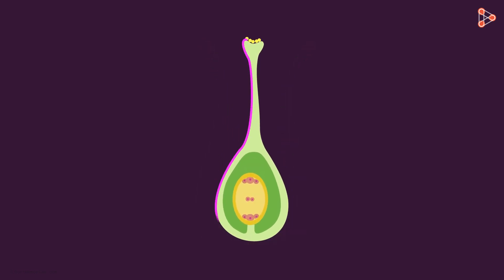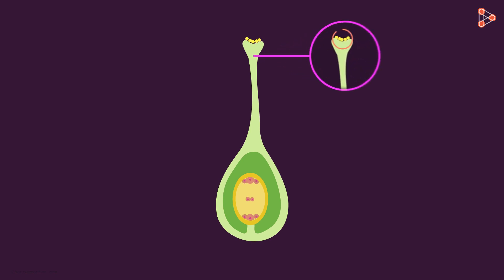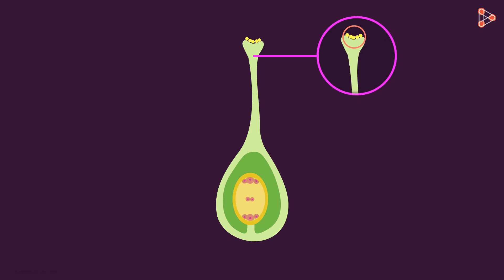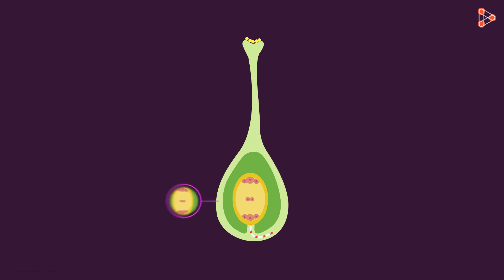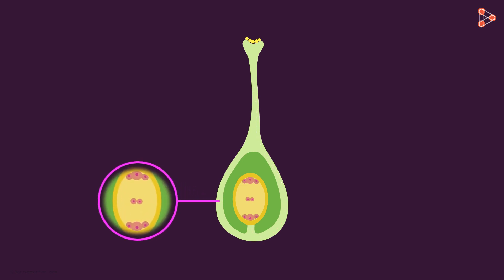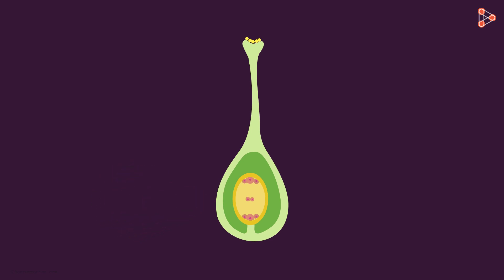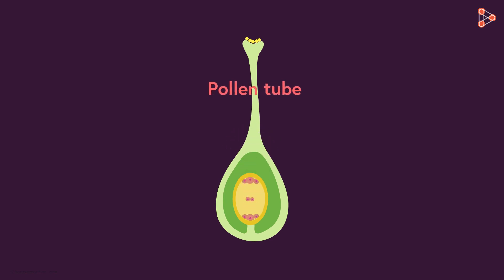Let us zoom into the structure of a typical pistil, the female reproductive part of the flower. The pollination process has caused the pollen grains to safely land on the stigma, which is seen here. For fertilization to occur, the male gametes need to reach the lower part of the pistil called the ovary, where the female gamete awaits. The female gamete, or the egg cell, is present inside the ovary. To form a zygote, the female gamete has to fuse with the male gamete. This is made possible by a structure called the pollen tube.